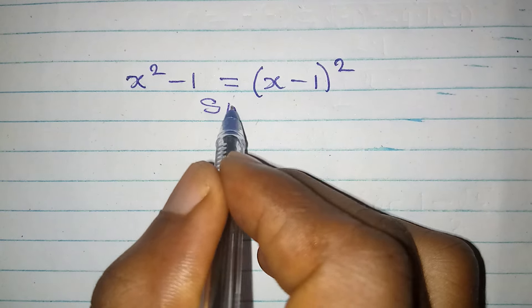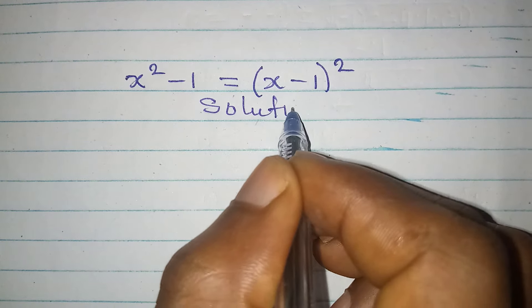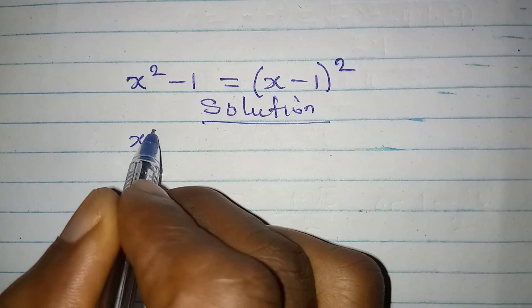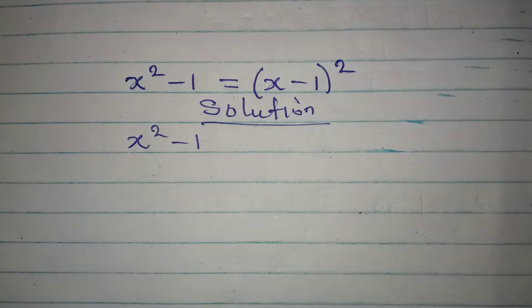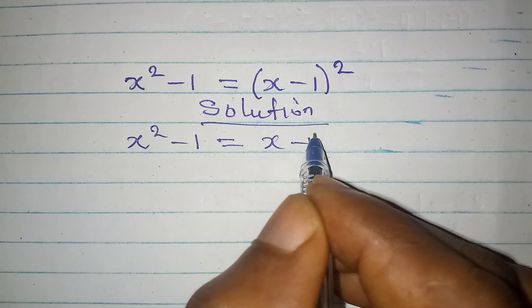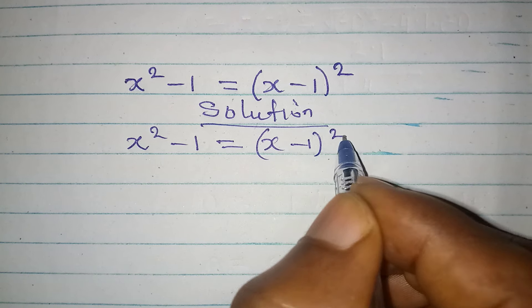Hello everyone, let's provide the solution to this problem: x squared minus 1 equal to x minus 1 squared.